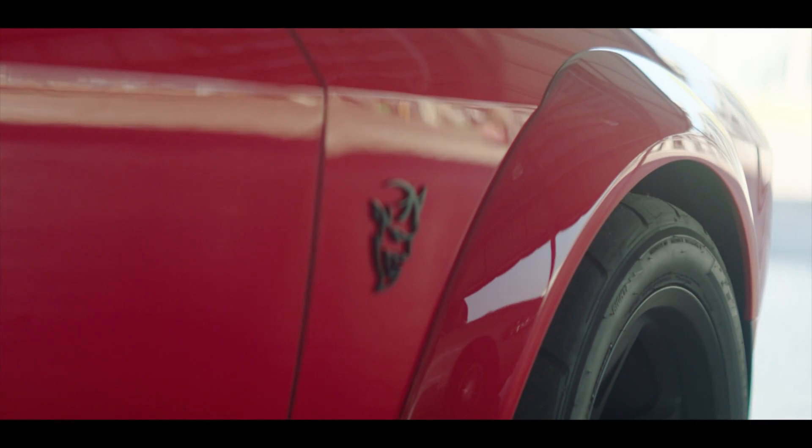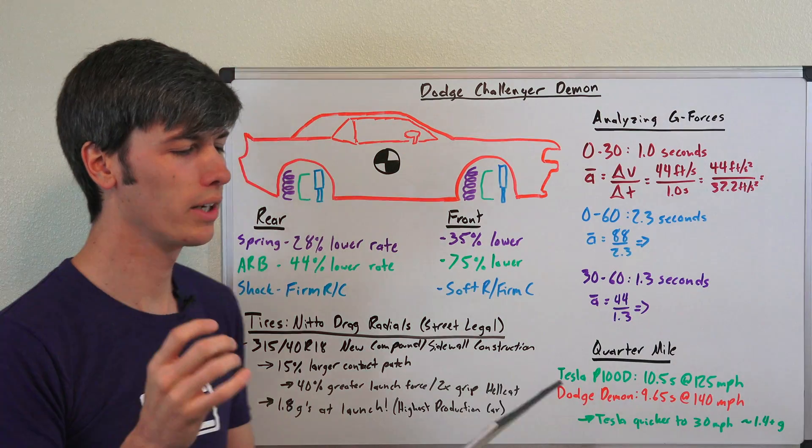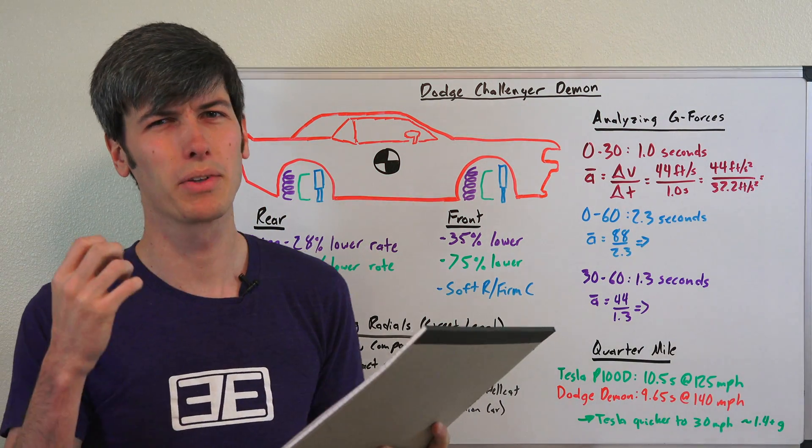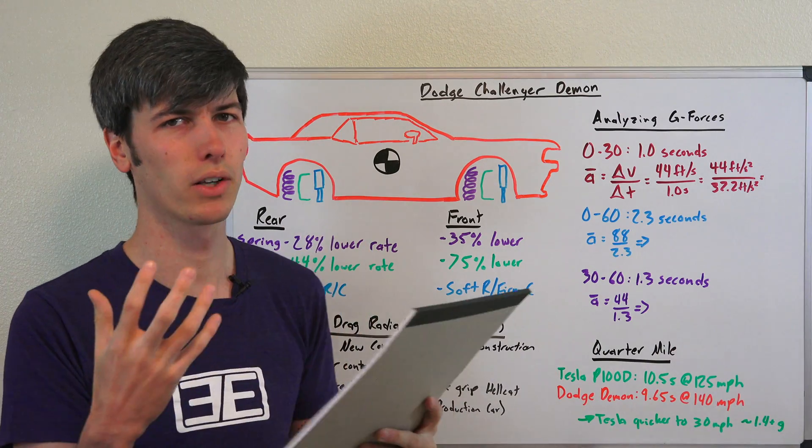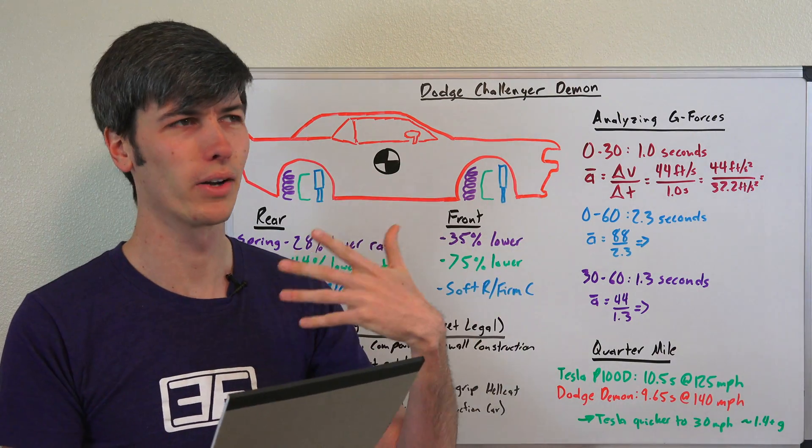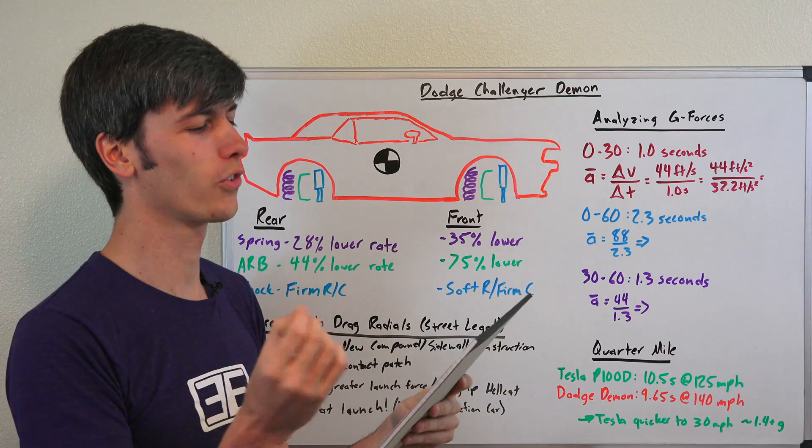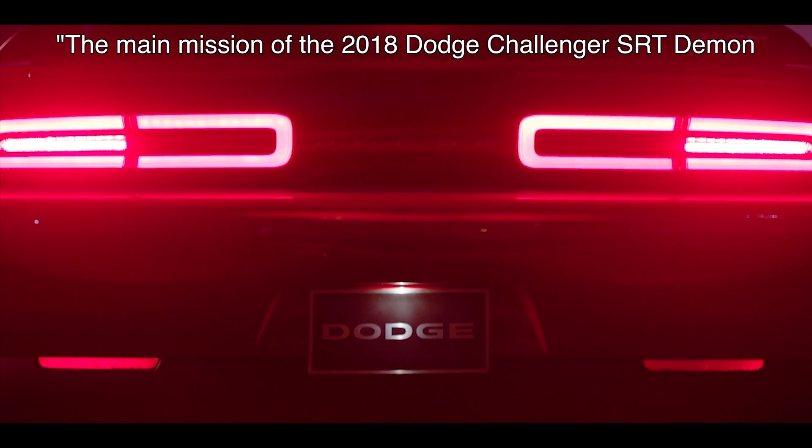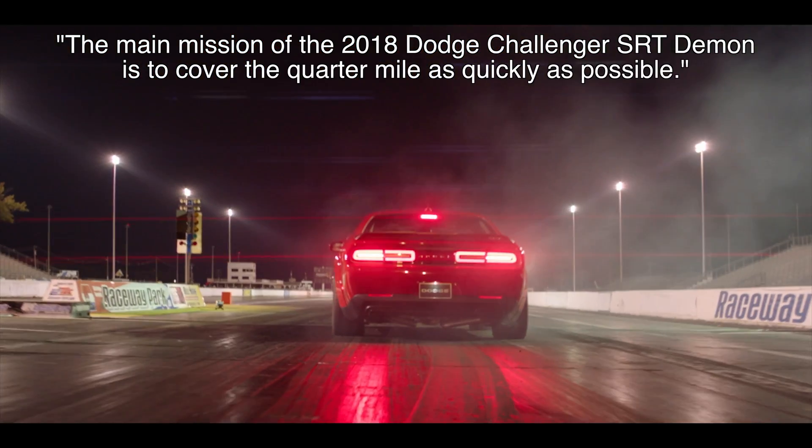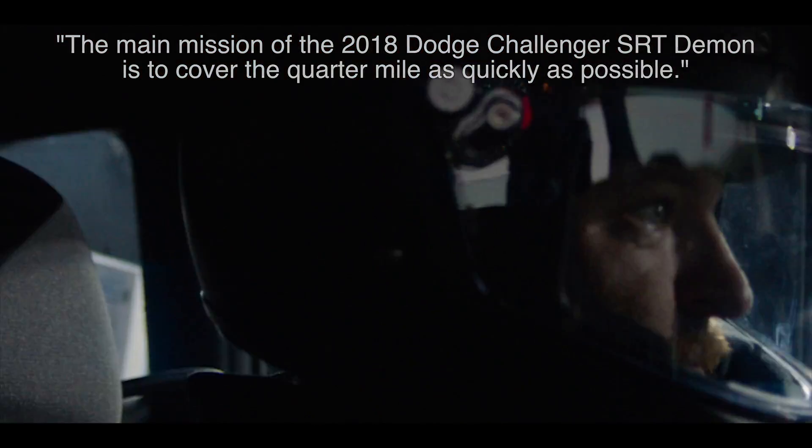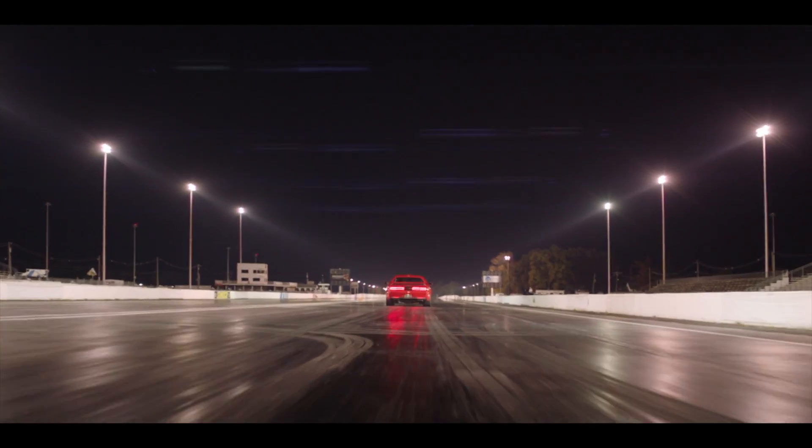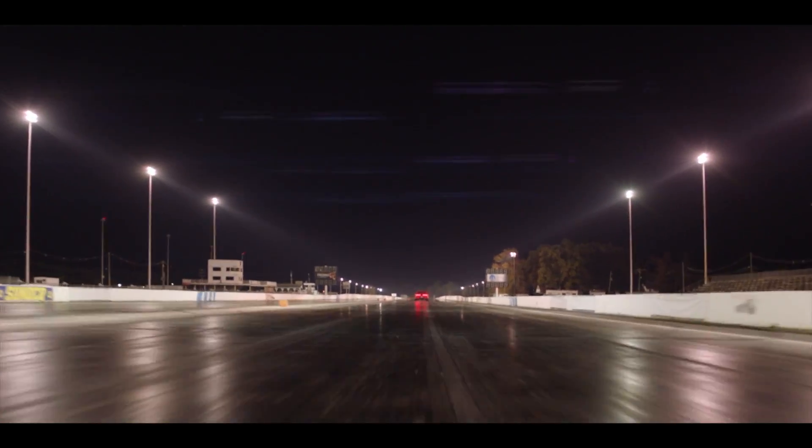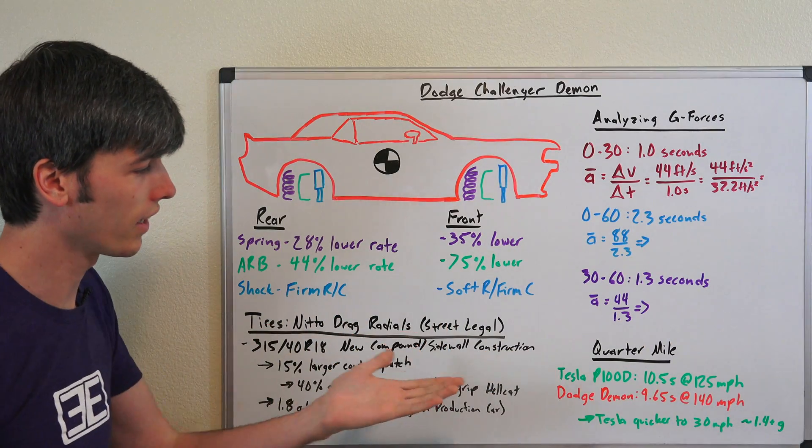Now before we get into it and exactly how it does it, I want to read a quote from Dodge's press release on this vehicle because I think there's going to be some confusion as far as how capable this vehicle is in different scenarios. The main mission of the 2018 Dodge Challenger SRT Demon is to cover the quarter mile as quickly as possible. So from a design standpoint, this vehicle was designed to be the fastest production car across the quarter mile.